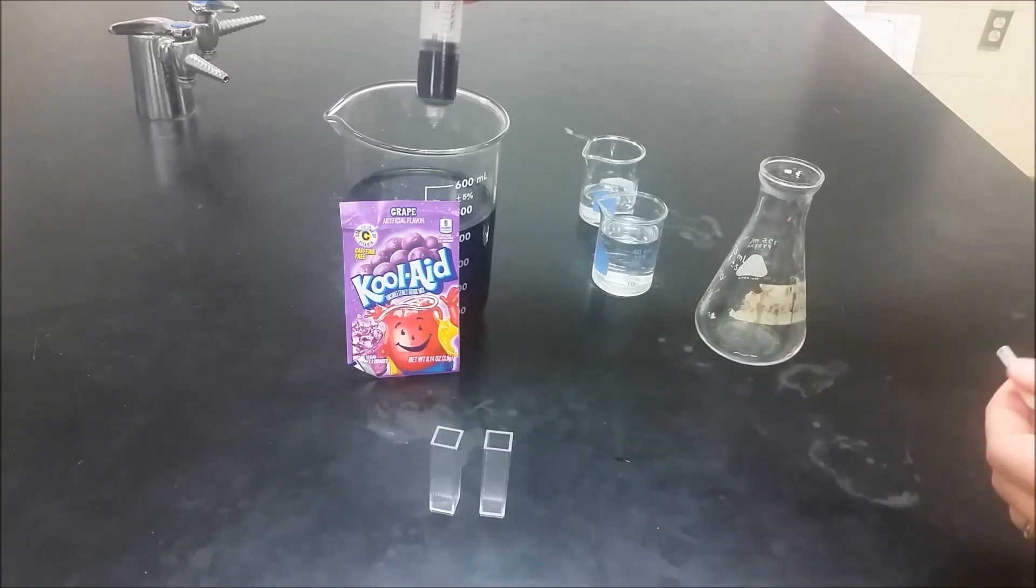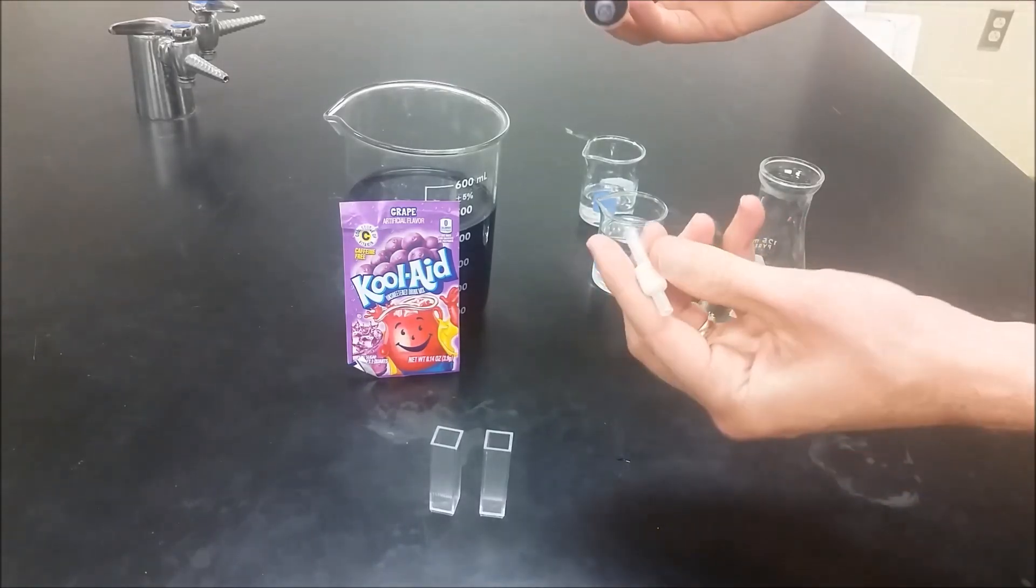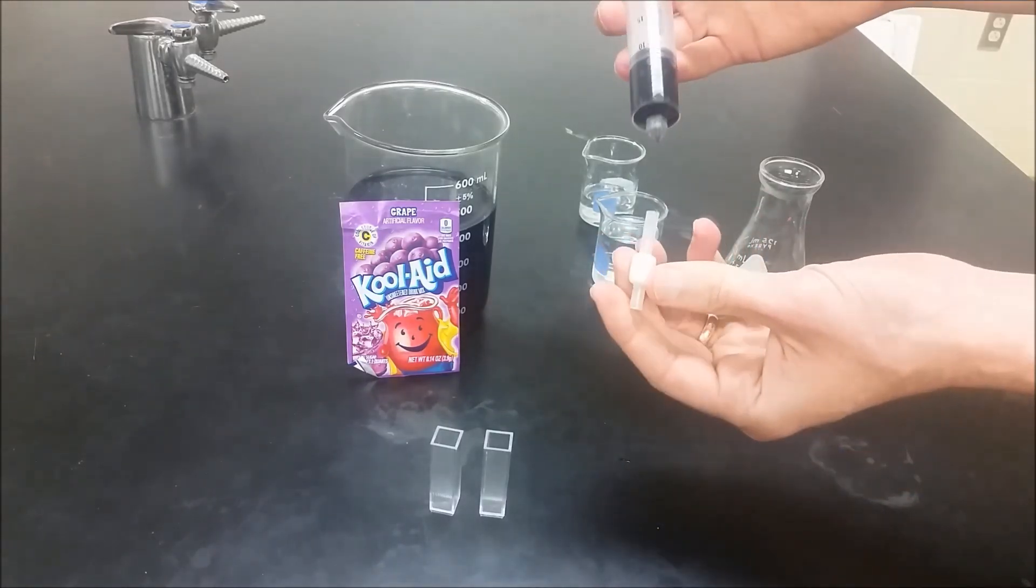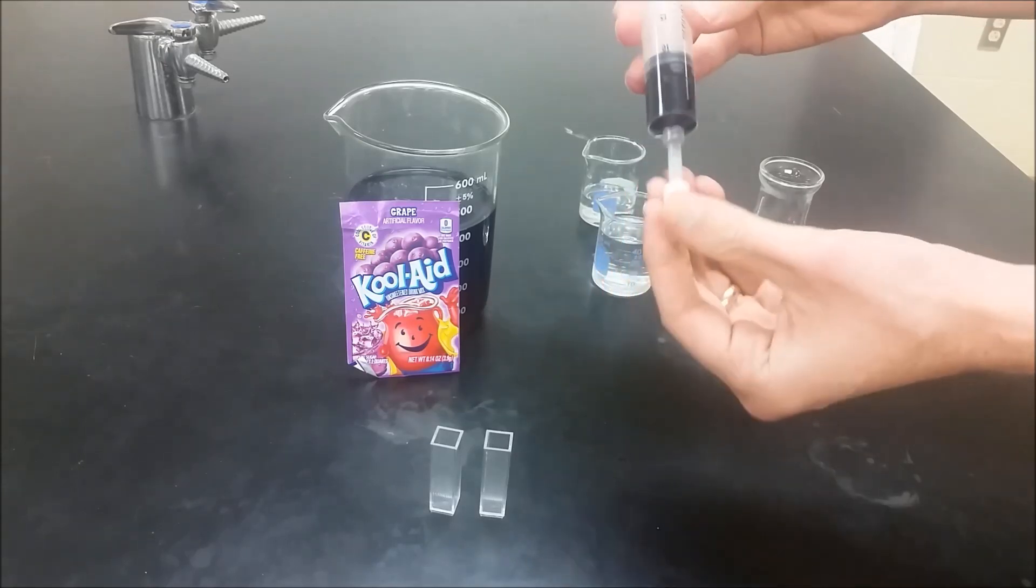We're going to take about 10 milliliters of grape Kool-Aid and we're going to attach our Sep-Pak cartridge. We're going to put the long end attached to the syringe.